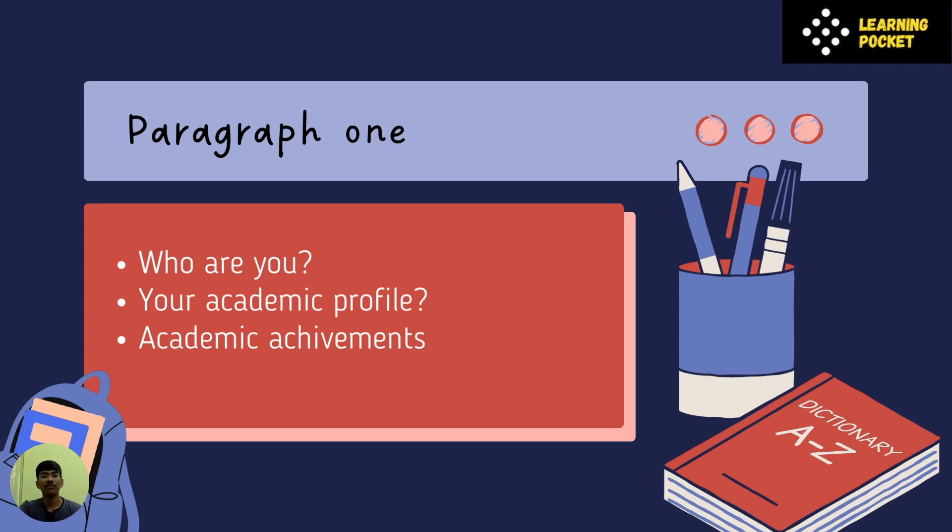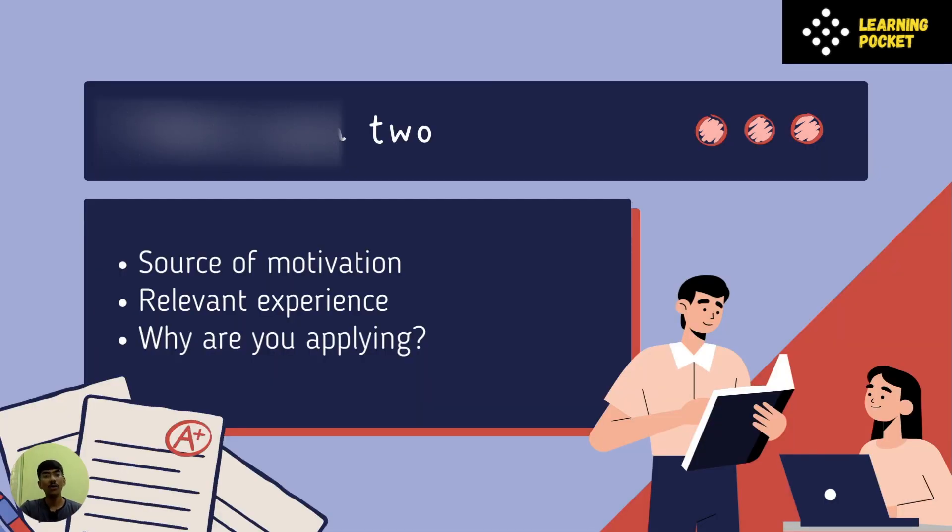The next paragraph would be about how you are motivated. What motivates you to do research in that particular field which you are applying to? What's the relevant experience you have? Maybe you have done some projects, maybe you are involved in some projects right now, maybe you have done some previous internships related to this particular research field. Then you can write all those things about what experiences you have gained. Something which is very important you think should be mentioned, you can write all those things.